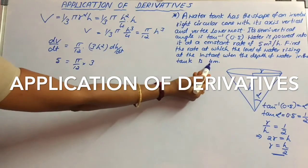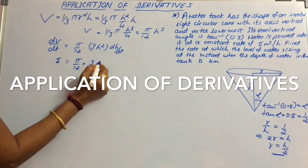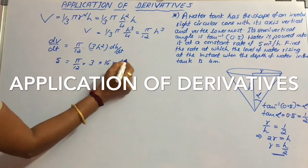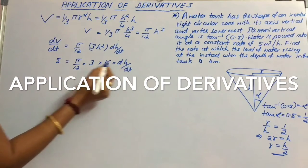Value of h is given now, that is 4 meters. So h squared means 4 squared, that is 16, into dh by dt. If we simplify,